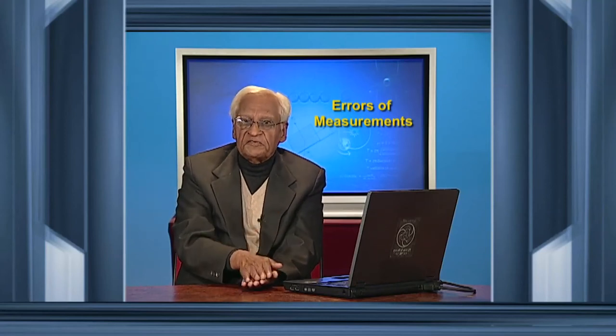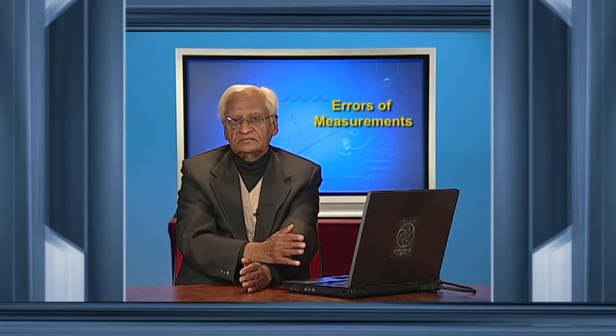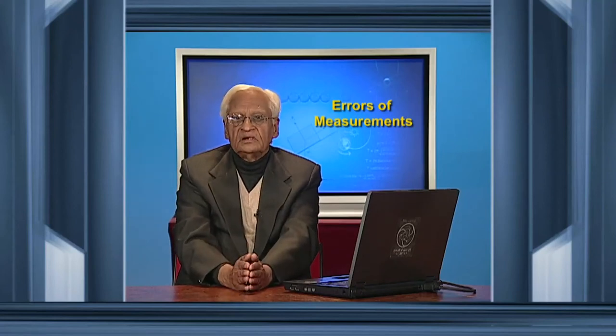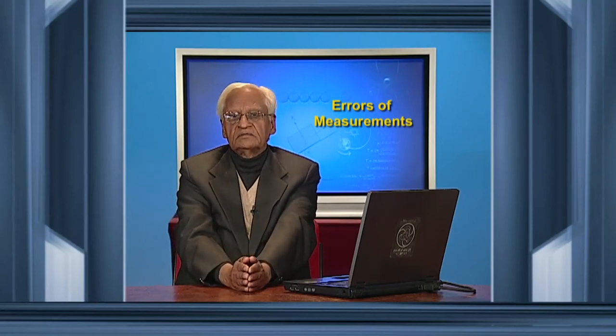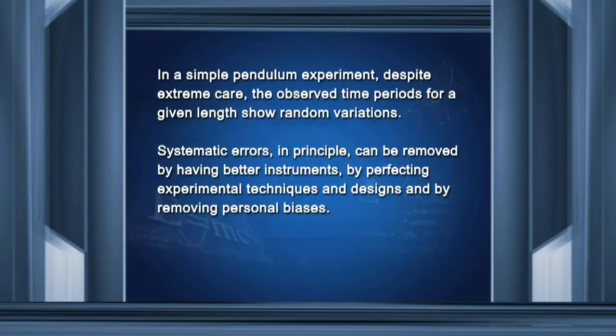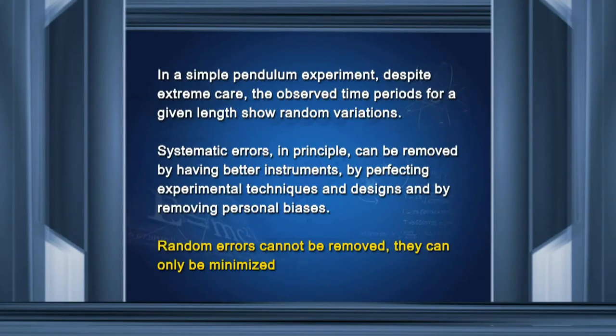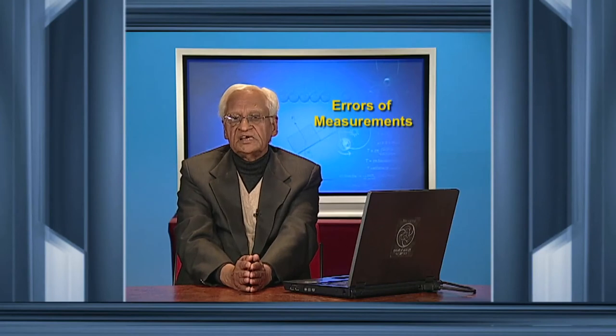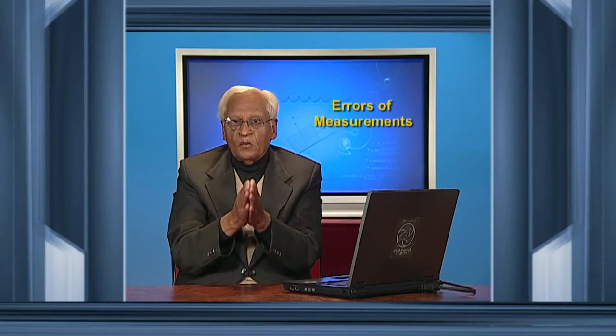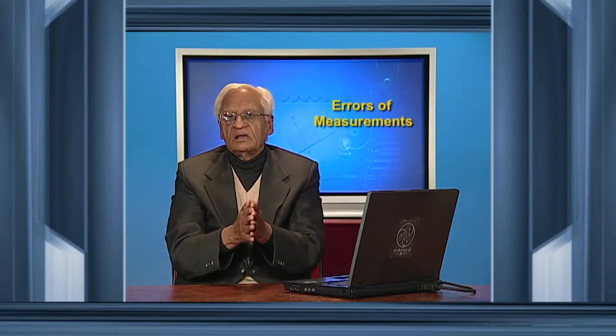The random error can shift the result to either side — it can be lower or higher than the actual value. Systematic errors, on the other hand, push the result only to one side. Systematic errors can be removed if we have perfect instruments, perfect experimental techniques, and if we remove personal biases. Random errors cannot be removed; they can only be minimized. Next time, we shall see how we can deal with random errors to minimize their effect.